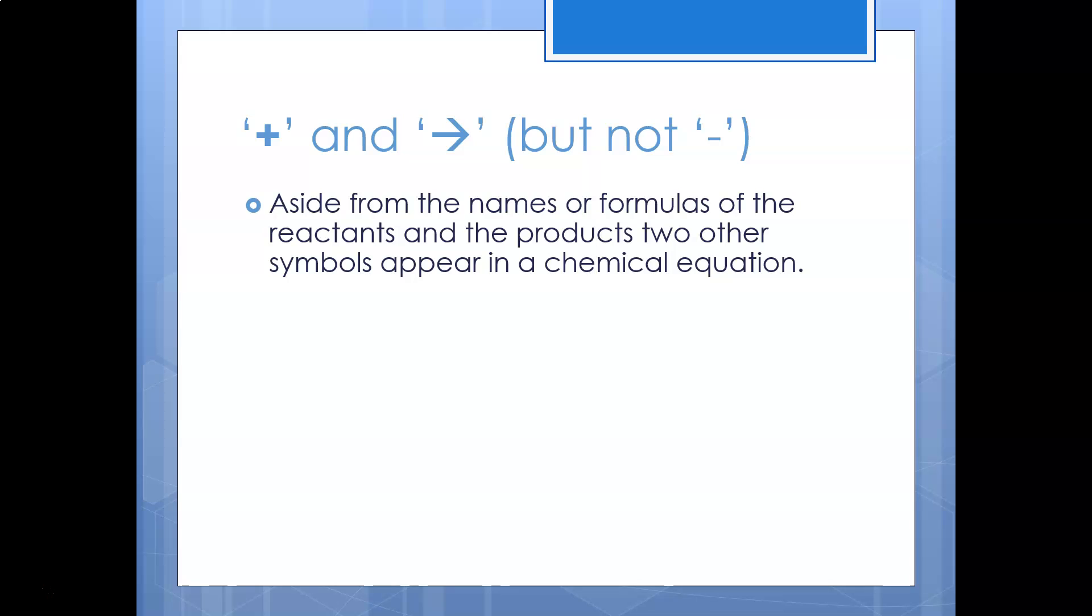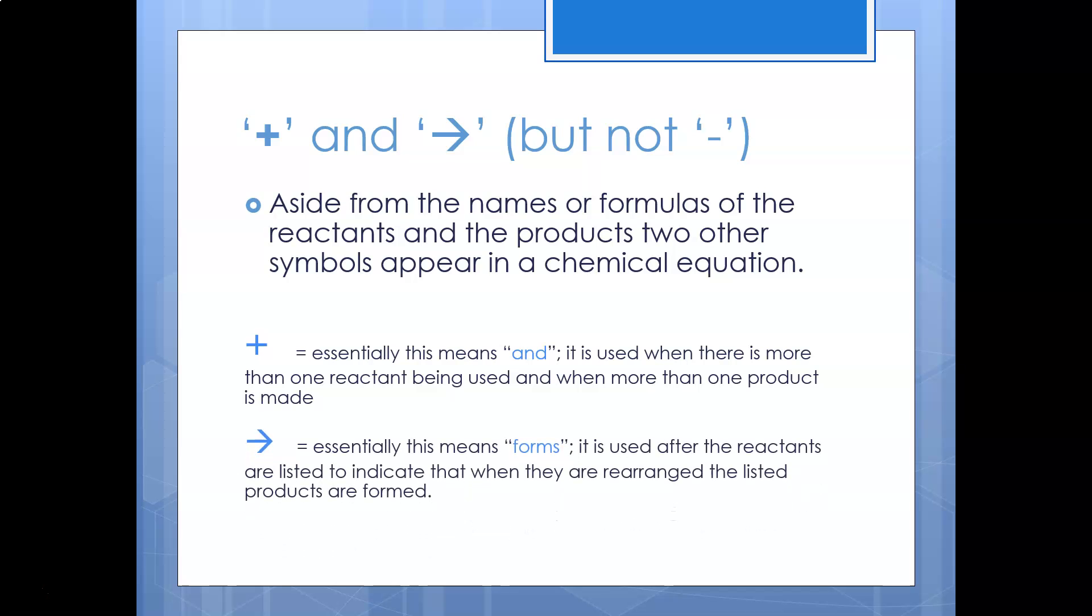We always have a plus and we always have an arrow in a chemical reaction but we never have a minus. So the plus basically means reactant A and reactant B were being added together. The arrow means moving from the reactants to the product, that's the chemical reaction, what is formed.